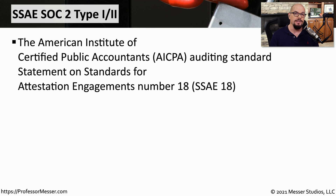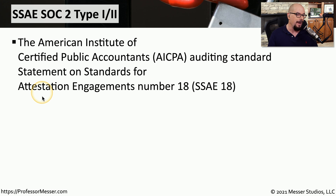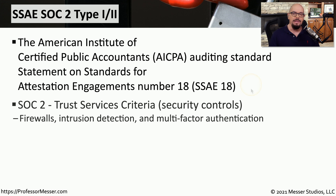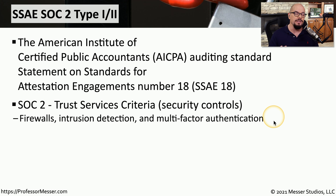If your organization has undergone an audit, then you're probably familiar with the SSAE SOC 2 Types 1 and 2. This is from the American Institute of Certified Public Accountants, or the AICPA. It's an auditing standard called the Statement on Standards for Attestation Engagements No. 18, or SSAE 18. During these audits, a series of reports are created, and the name for the suite of reports associated with trust services criteria or security controls is the SOC 2 — the System and Organization Controls No. 2. This audit focuses on topics that can include firewalls, intrusion prevention, intrusion detection, or multi-factor authentication.